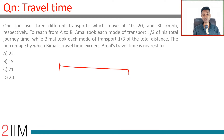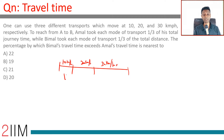The three speeds are 10, 20, and 30 kilometers per hour, each used for one third of the total journey time. Bimal, on the other hand, took each mode of transport for one third of the total distance.